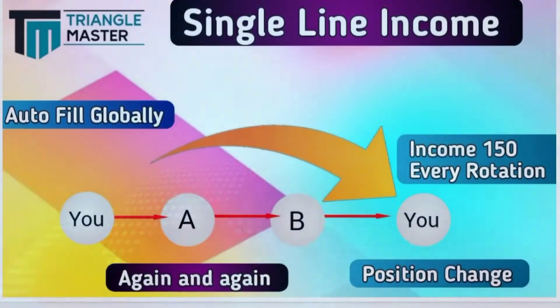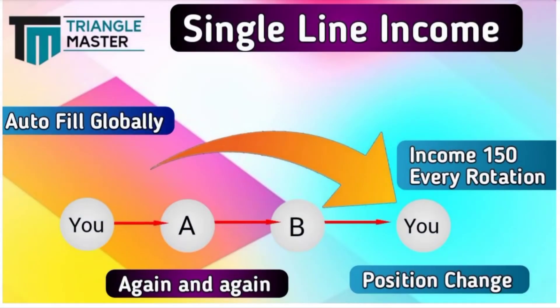Our next income is single line income. It works globally, meaning IDs will be filled globally in your downline. When only 2 members fill your downline, you get $1.74, that means 150 INR. Your position changes with every rotation and the same logic works again and again.